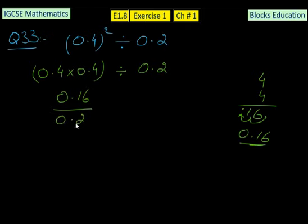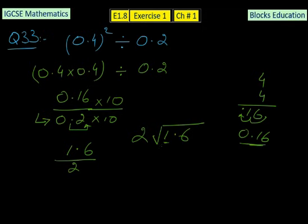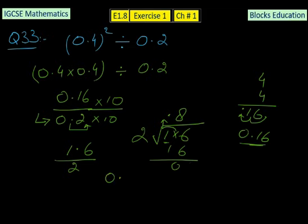Now we have 0.16 divided by 0.2. As per the rule, the denominator must be an integer, so we multiply by 10: the denominator becomes 2, and the numerator 0.16 becomes 1.6. Dividing 1.6 by 2: since 1 is smaller than 2, we consider 16 by moving the decimal point up. Then 2 × 8 = 16, remainder 0. The answer is 0.8.